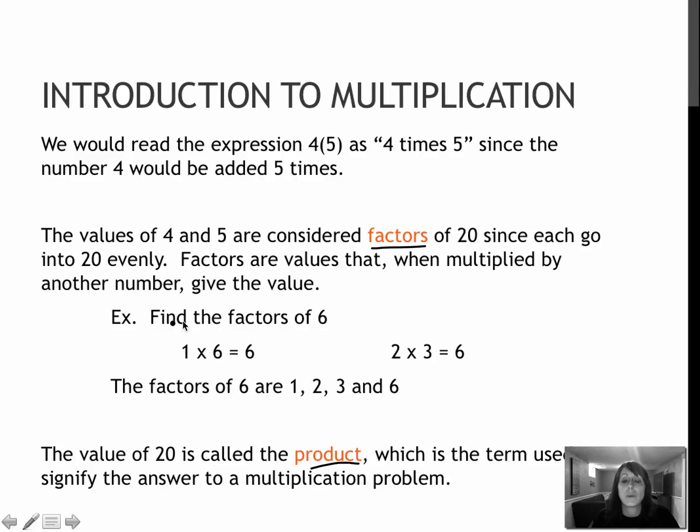For instance, if I were to find the factors of six, I would think one times six is six, and two times three is six, and that's all of the factors. So my factors are one, two, three, and six.